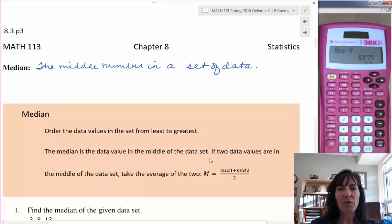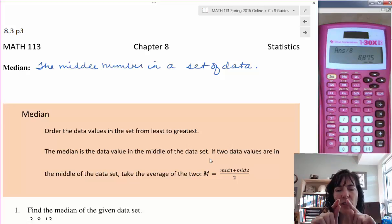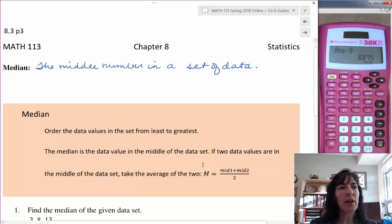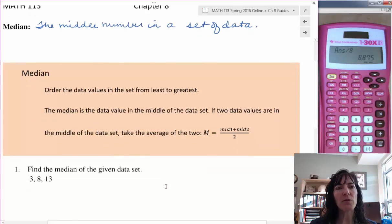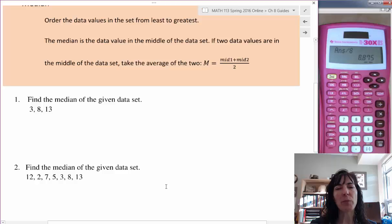If you happen to have an odd number of data values, you'll have one value that's in the middle. If you happen to have an even number of data values, when you cross off from each end, you'll end up with two numbers in the middle, and you just take the average of them. Take the average of the two middle numbers, so mid1 + mid2 divided by 2, and that'll give you your median. We can use a capital M to signify the median, whether it's from a population or a sample.